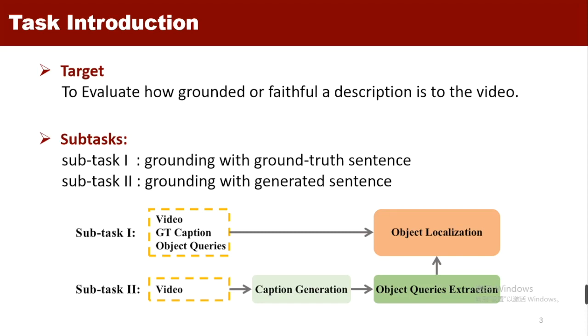For subtask 2, grounding with generated sentence, it consists of two stages. First, automatically generating descriptions for the video. And second, identifying the object words in the description and localizing them in the video.